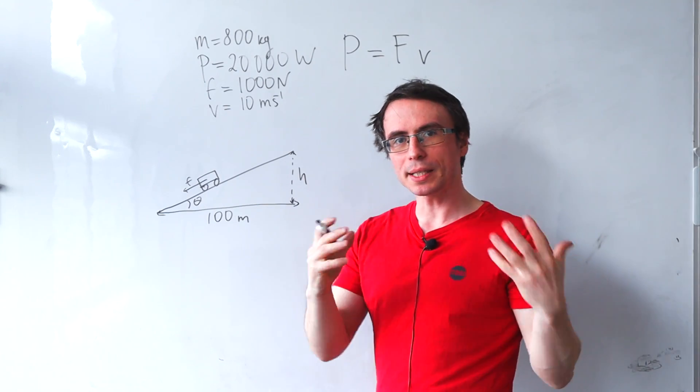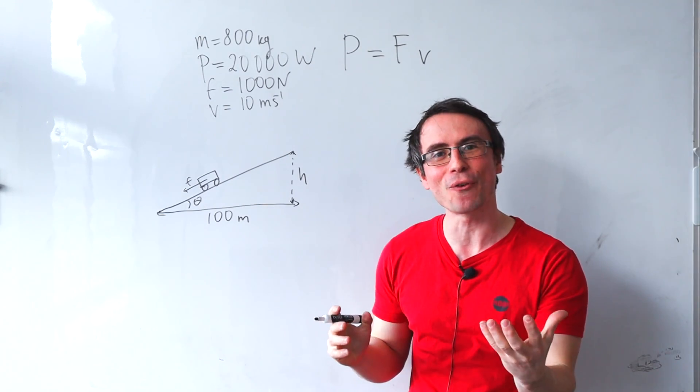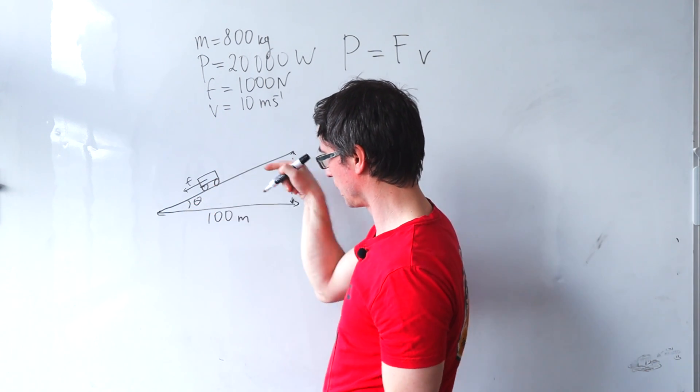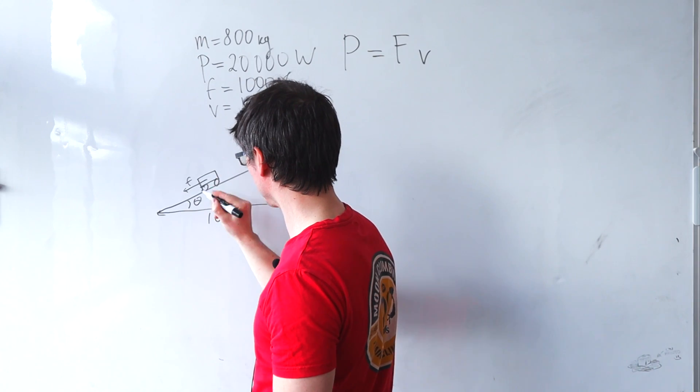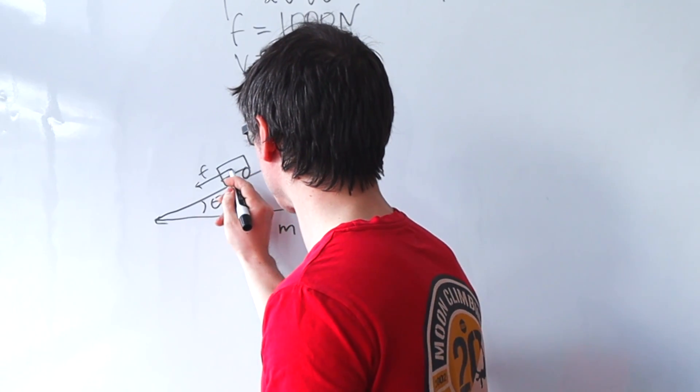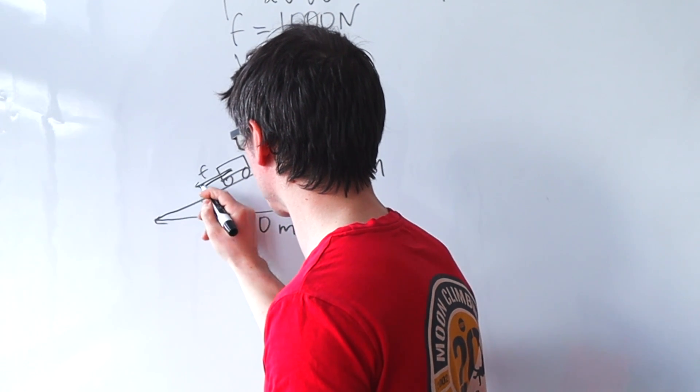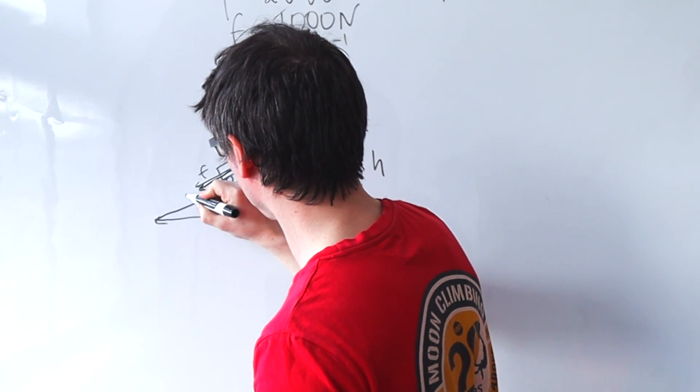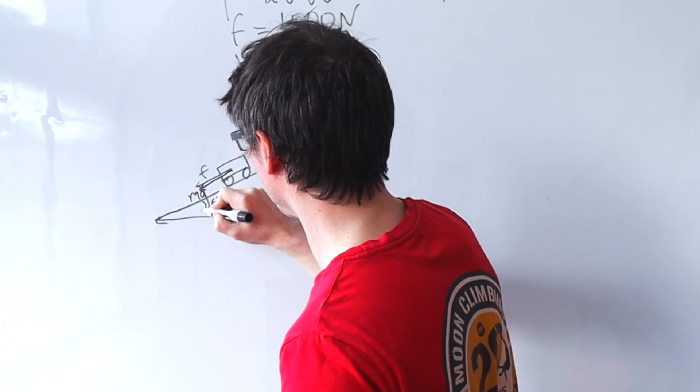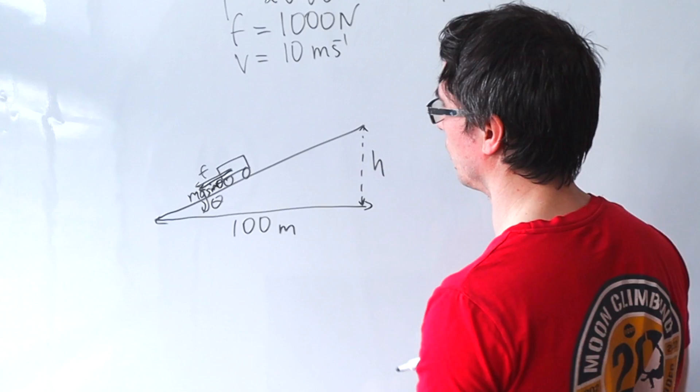Now let's think about the balance of forces in this case. We have the frictional force acting down here along the slope. We will also have a component of gravity acting along the same direction, so this component parallel to the slope will be mg times sine of the angle.